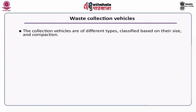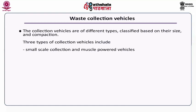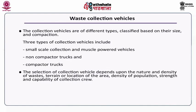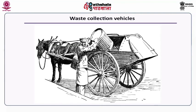Now let us discuss about waste collection vehicles. The waste collection vehicles are of different types and are generally classified based on their size and compaction. There are three types: small scale or muscle powered collection vehicles, non-compacted trucks, and compacted trucks. The selection of collection vehicle depends upon the nature and density of waste, terrain or location of the area, density of population, and strength and capability of the collection crew. This image shows a person collecting waste in a cart driven by a horse — a conventional collection vehicle used in ancient times.